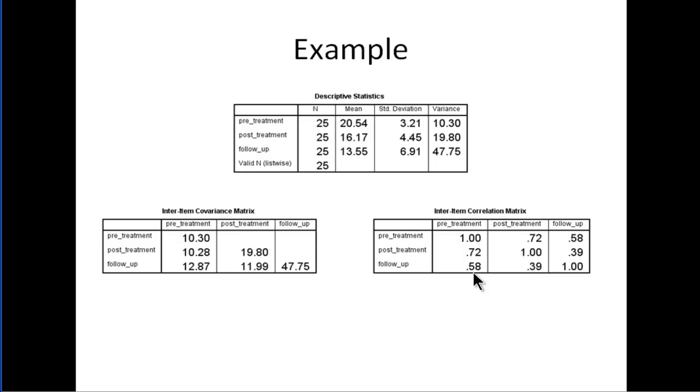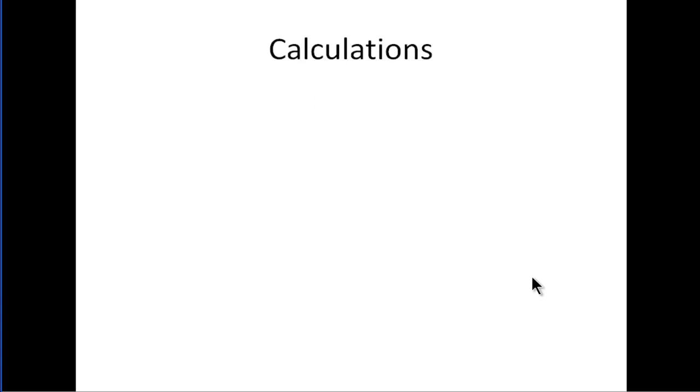Post-treatment and follow-up here is a correlation of 0.39, so you get variabilities in the covariances slash correlations and you get variabilities in the variances. This is how you could calculate those terms for each of the comparisons.